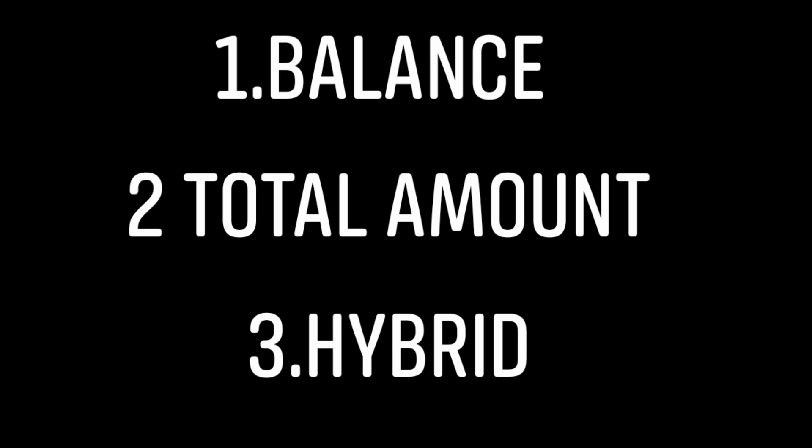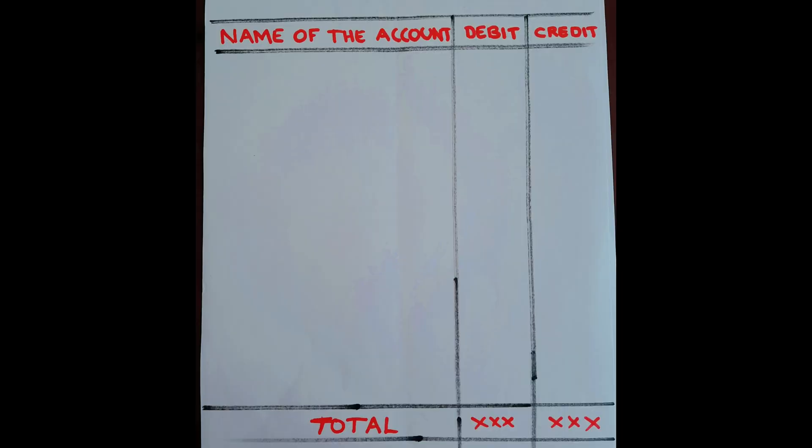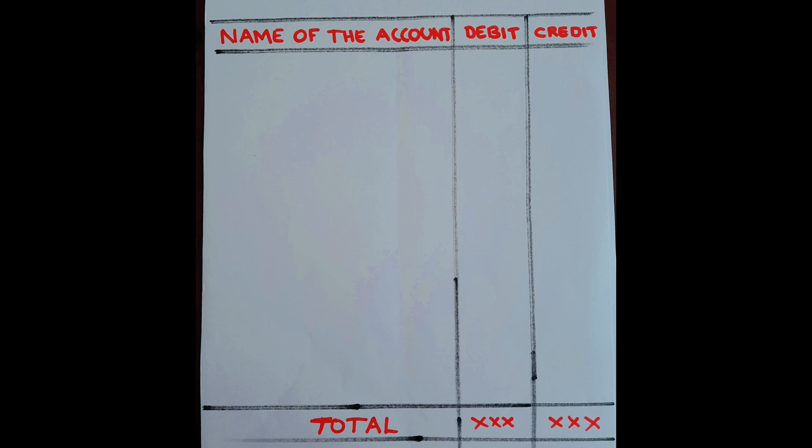Methods of preparing trial balance — we have three methods: balance method, total amount method, and hybrid method. Under the first method, we consider only the balances of ledger accounts. In the total amount method, we take the total of debits and credits. The third method, called hybrid method, is a combination of the first two. But in practice, we use the first method — the balance method.